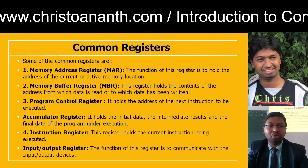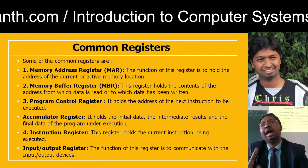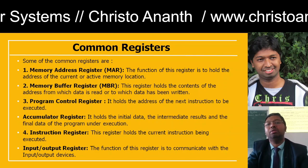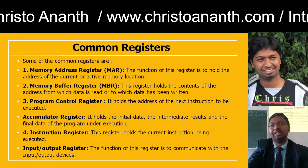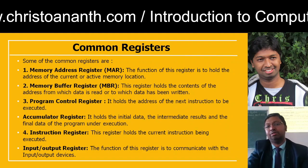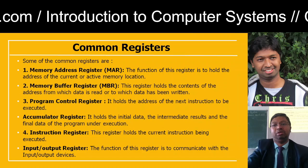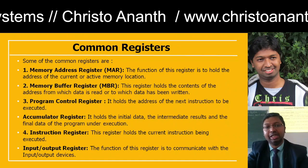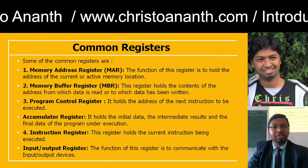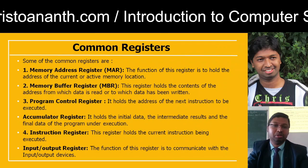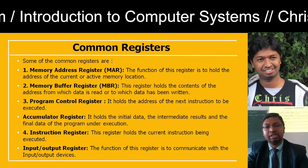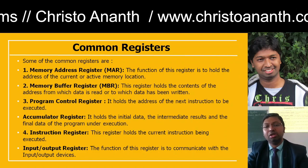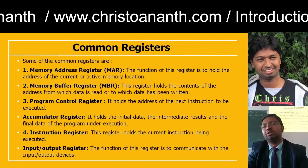The memory address register holds the address of the current or active memory location. The memory buffer register holds data that is being read or written. The program control register holds the address of the next instruction. The accumulator register holds initial data, intermediate results, or final data of the program being executed. The instruction register holds the current instruction being executed. The input/output register handles the functions of input and output devices.